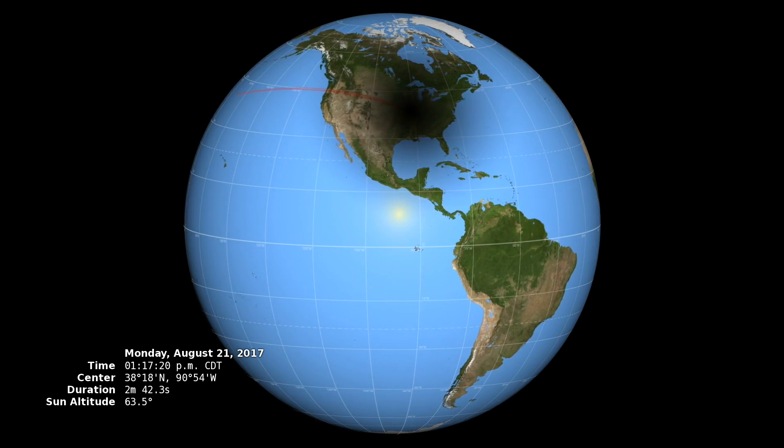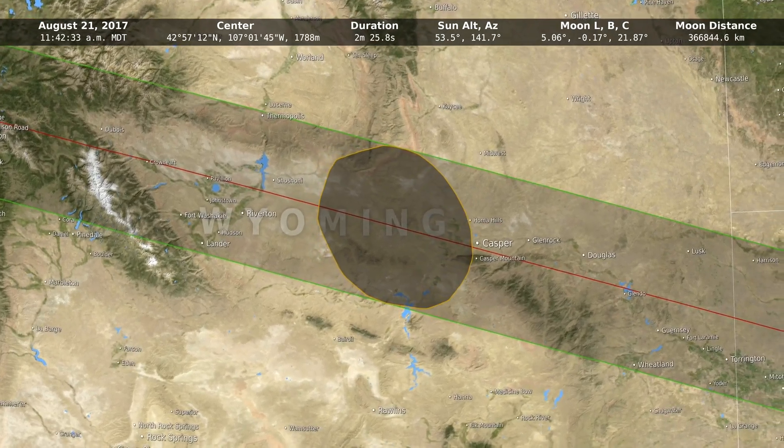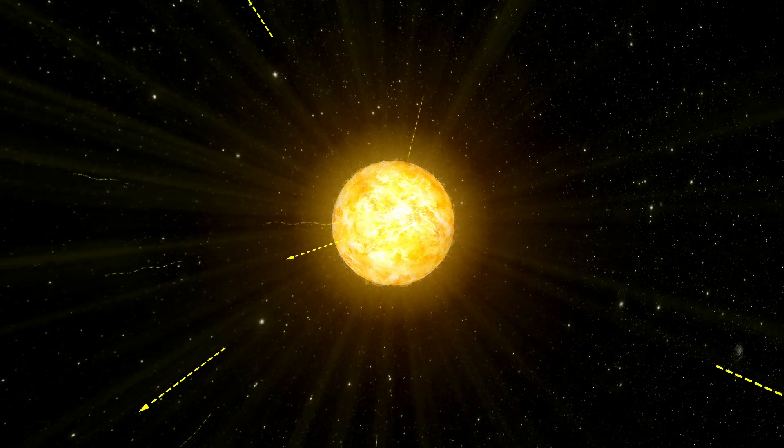A team of scientists will combine data from EPIC with measurements taken on the ground to learn more about how the sun's energy is absorbed and reflected in Earth's atmosphere.